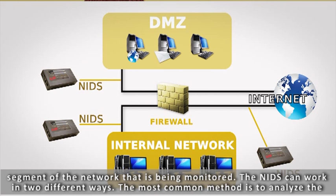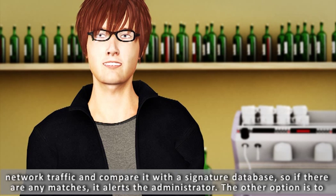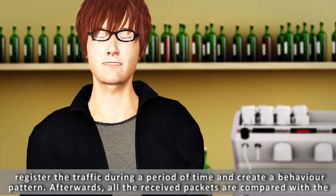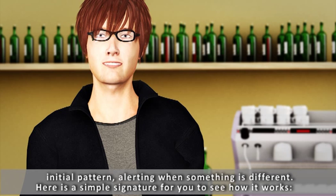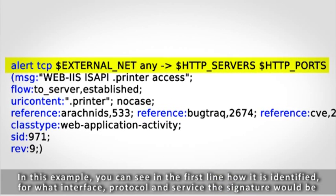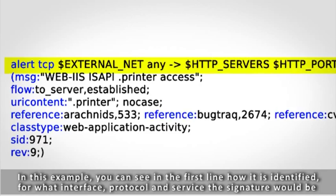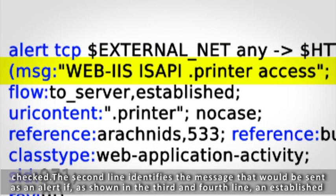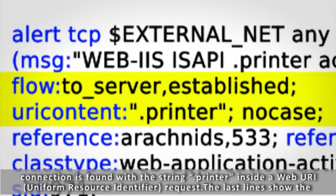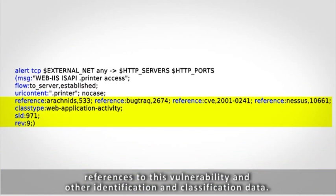The NIDS can work in two different ways. The most common method is to analyze the network traffic and compare it with a signature database, so if there are any matches, it alerts the administrator. The other option is to register the traffic during a period of time and create a behavior pattern; afterwards, all received packets are compared with the initial pattern, alerting when something is different. Here is a simple signature for you to see how it works. In this example, you can see in the first line how it is identified, for what interface, protocol, and service the signature would be checked. The second line identifies the message that would be sent as an alert if, as shown in the third and fourth lines, an established connection is found with a string inside a web URI (Uniform Resource Identifier) request. The last lines show references to this vulnerability and other identification and classification data.